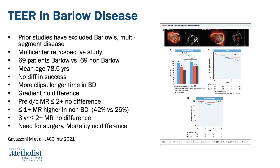There was no difference in gradients between Barlow's versus non-Barlow's. Pre-discharge MR severity of 2-plus or less showed no difference between groups. The incidence of 1-plus or less residual mitral regurgitation was higher in non-Barlow's disease — 46 versus 26%. However, at 3 years, there was no difference in moderate or less mitral regurgitation, and no difference in need for surgery or mortality. The caveats are small numbers of carefully selected patients from multiple centers.